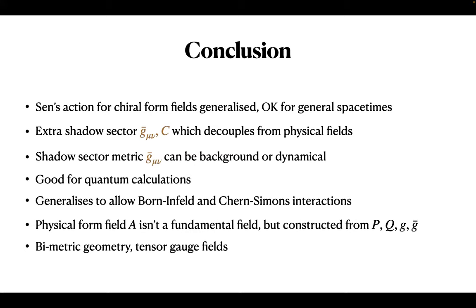In response to a question about whether one can write the type IIB action: Sen already wrote down the type IIB supergravity action using his formalism, and this generalization works in that case too. In particular it tells you how to write it down on ADS5 cross S5, which was a problem for Sen because it wasn't clear how his action would make sense on anti-de Sitter space, since anti-de Sitter space doesn't admit a Minkowski metric.